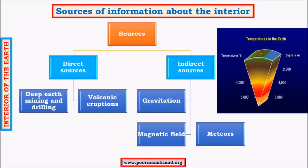What are the sources of information about earth's interior? There are basically two kinds: direct sources and indirect sources. Direct sources — like deep earth mining and volcanic eruptions — tell us that earth's interior is very hot and under great pressure. Indirect sources — like gravitation, magnetic field, and meteors — give us more detailed information about earth's interior.